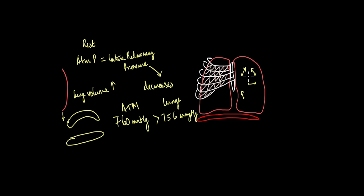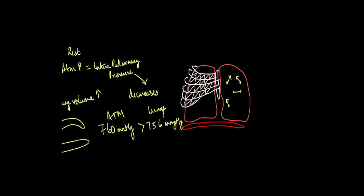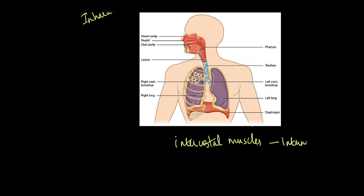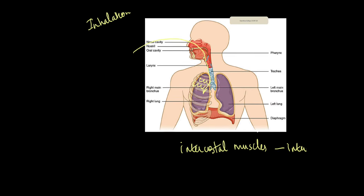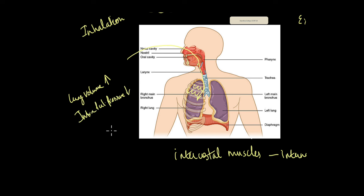With the increase in lung volume, air is now able to enter the lungs. This is what happens during the process of inhalation: the lung volume expands, which decreases the intrapulmonary pressure, and thereby air moves in because of this pressure gradient — the atmosphere is at a higher pressure compared to the lungs.